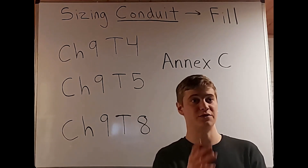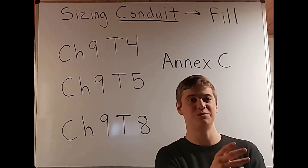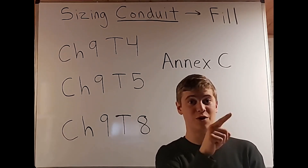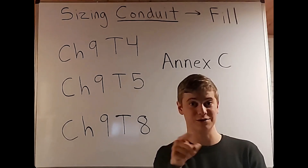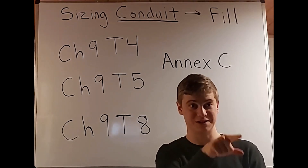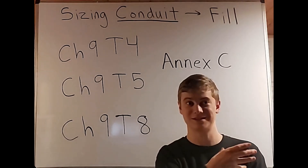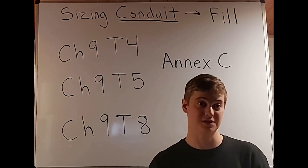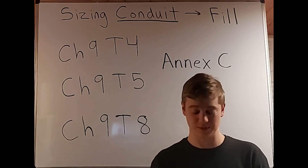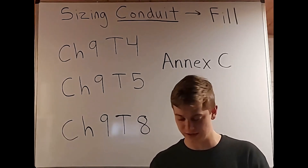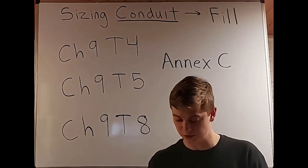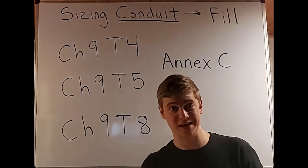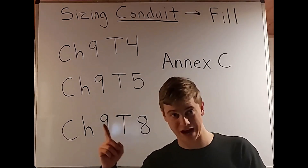And then you have the 40%, which is over two wires — but the column will literally say 'over two wires,' and under it, it will say 40%. So it's clear as day, and that's why it's good to just go over these things, because you're going to be reminded of them when you're solving these problems that use these tables and this chapter.